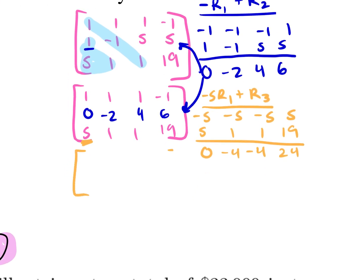Be super, super careful with your math for all of these — it's just a lot of little calculations and one number added wrong will throw everything off. So our current matrix is: row one: one, one, one, negative one; row two: zero, negative two, four, six.